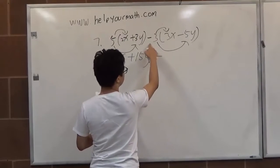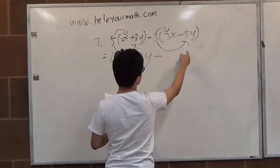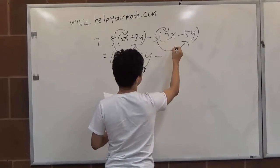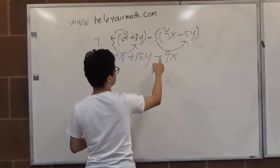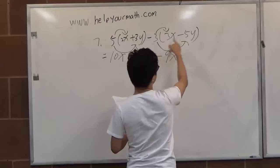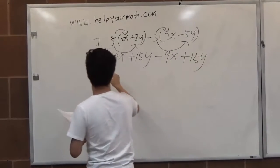Minus 3. We have a minus here, so inside the parentheses it should be minus. Minus 3 times 3x is minus 9x, and minus times minus is plus 15y.